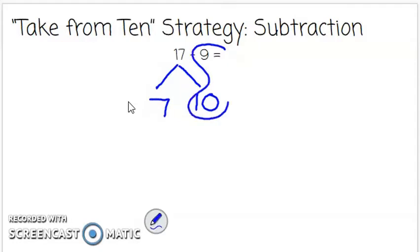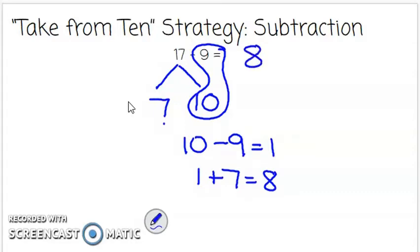So now I can easily see 10 take away 9 is 1. But I still have that 7 that I didn't touch. So 1 plus 7 is 8. Therefore 17 minus 9 is 8.